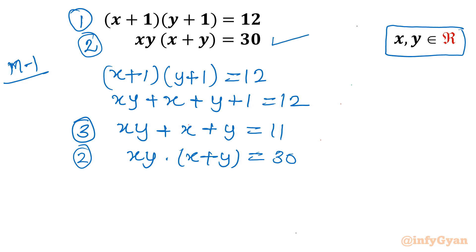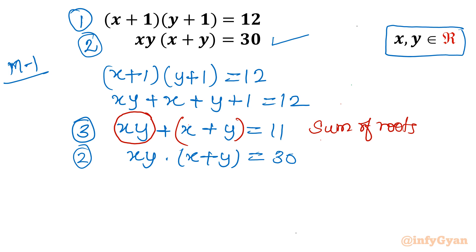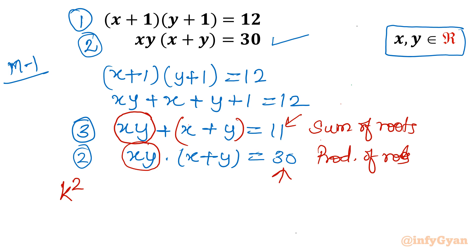Now you can see that if I consider one equation whose roots are xy and (x+y), then equation 3 — xy + x+y = 11 — represents the sum of roots, and equation 2 — xy·(x+y) = 30 — represents the product of roots. So I can presume the product of roots is 30 and the sum of roots is 11. I can frame one quadratic equation in a new variable k to find xy and x+y.